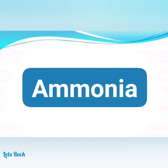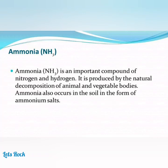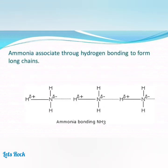Ammonia is an important compound of nitrogen and hydrogen. It is produced by the natural decomposition of animal and vegetable bodies. Ammonia also occurs in the soil in the form of ammonium salt. Ammonia associates through hydrogen bonding to form long chains.